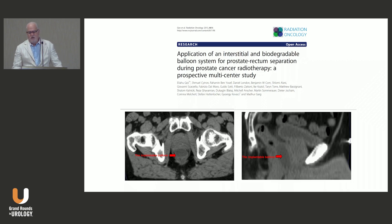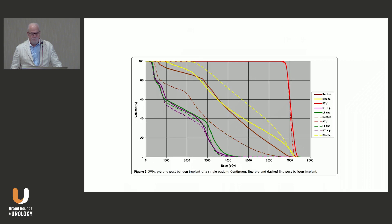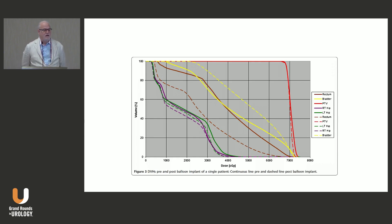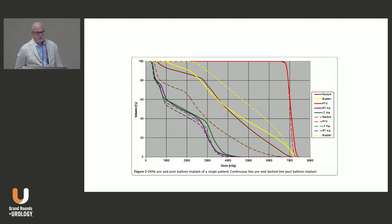Another product being tested is a biodegradable balloon—the same concept of placing a deflated biodegradable balloon into the perirectal space and inflating it to create a buffer. The dose reduction shown by the brown lines demonstrates a significant reduction in rectal dose by displacing the prostate away from the rectum. This requires training, and since it's biodegradable it doesn't need to be retrieved. Companies are actively marketing this technology.